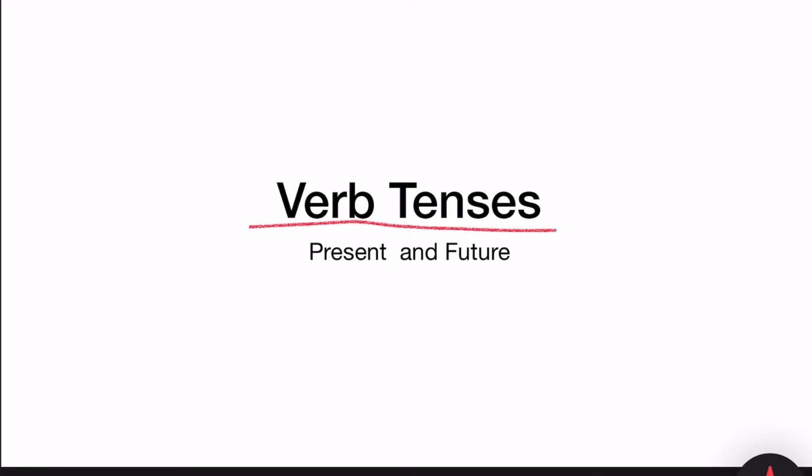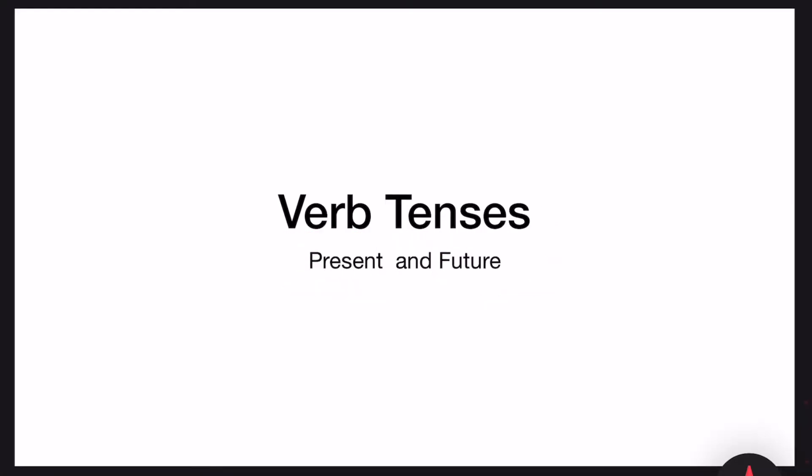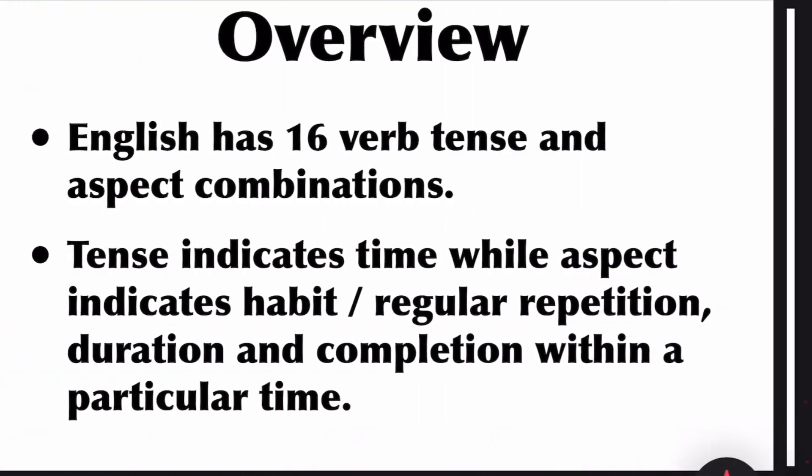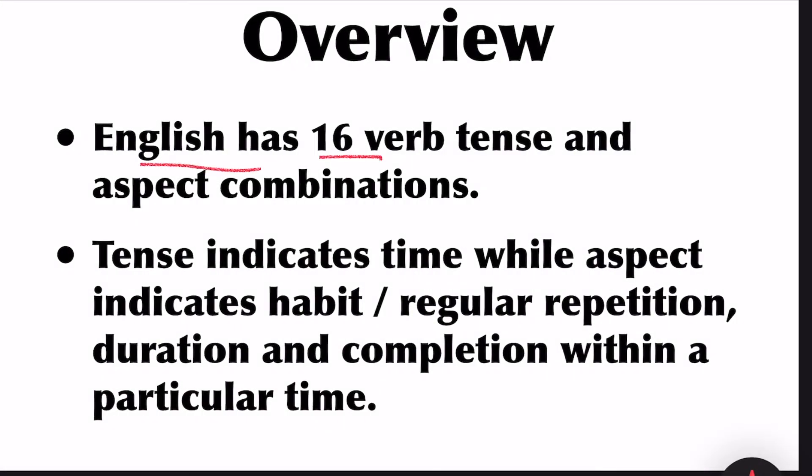We are going to discuss three basic tenses: present tense, present continuous tense, and future tense. I am going to explain these three tenses using pictures. Let's get into the lesson. English has 16 verb tense and aspect combinations.